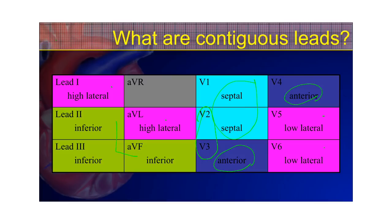If the precordial electrodes are close to each other and in sequence, they're contiguous — so V2 and V3 are contiguous, and V4 and V5 are contiguous. AVR gets no respect, as Rodney Dangerfield would say — it's out there in no man's land, looking at a non-specified area of the heart and doesn't really have contiguous leads. V1 would be the closest to the same view, so you'll often see similar morphologies in AVR and V1.